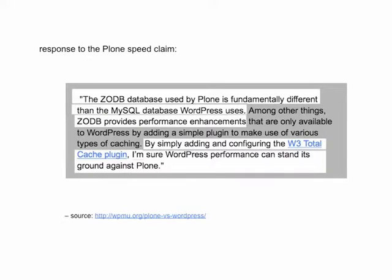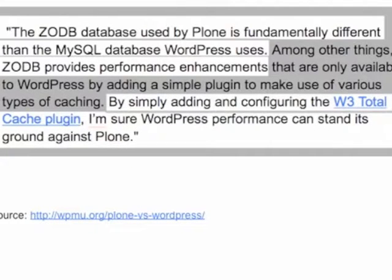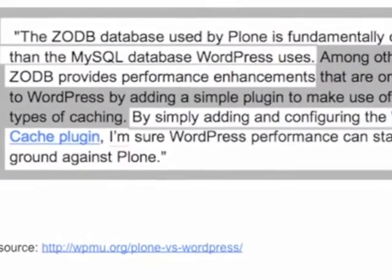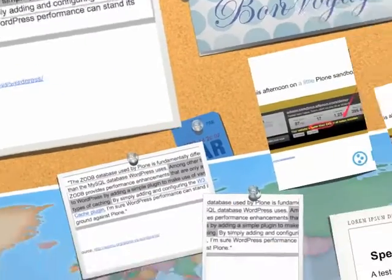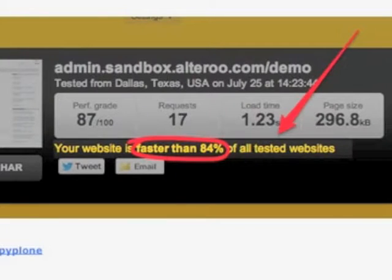There was a response from the WordPress community about the Plone speed claims — performance enhancements that make your site better without having to add anything is probably a good thing. Plone does not use MySQL, which is actually wonderful. I did a test on a Plone site I set up at Pingdom — just a little sandbox, not a fancy setup — and it was faster than 84% of sites on the internet tested using that tool. Plone has been engineered to be faster than all of the major PHP CMSs on the market.